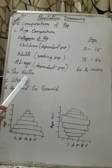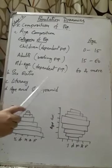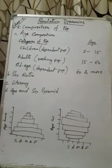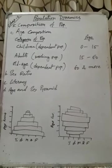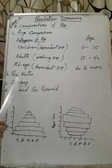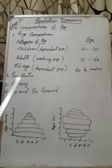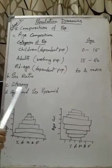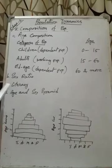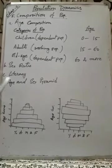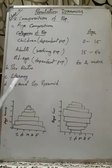Our next characteristic is sex ratio. Sex ratio tells us about the number of males and females in a particular area. Generally, we express it as the number of females per thousand males. In our country, this ratio is not good — the number of females is less than the number of males. Literacy tells us about education — the number of educated people in any place — and we can express that with the term literacy rate.